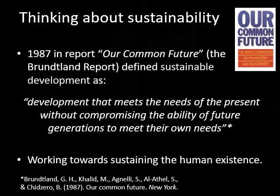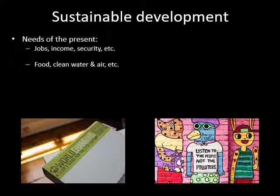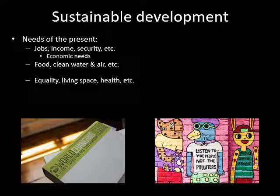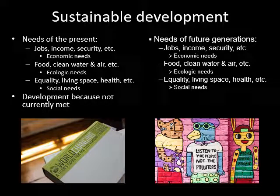In 1987 there was a report about our common future — development that meets the needs of the present without compromising the ability of future generations to meet their own needs. The needs of the present include jobs, income security, food, clean water, equality, living space, health, economic needs, ecological needs and social needs — many of which are not currently met. Future generations have very similar, exactly the same needs.